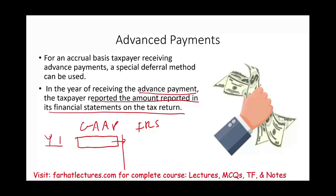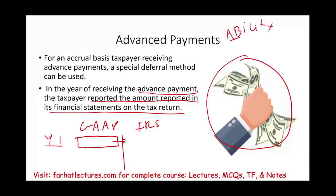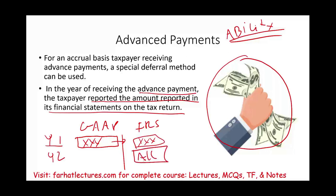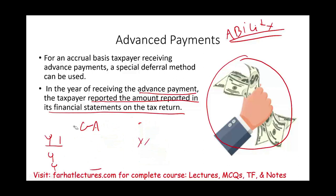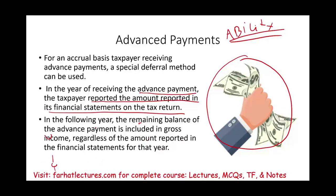The IRS says: once you receive the payment, it doesn't matter whether you performed the service — you have the ability to pay taxes. But under the special deferral method, for year one only, you report what you reported for GAAP. However, in year two, the remaining balance of the advanced payment must be included in gross income regardless of how it's reported under GAAP. For GAAP, the deferral could extend to year three, four, or five, but the IRS only gives you a one-year break.